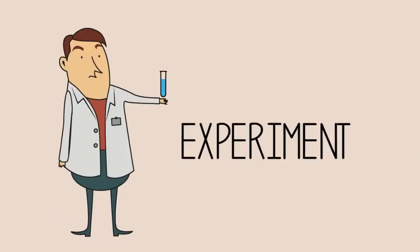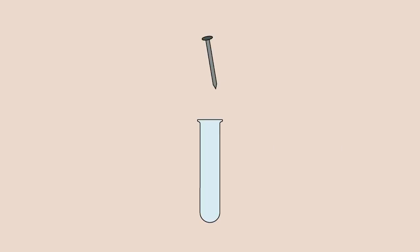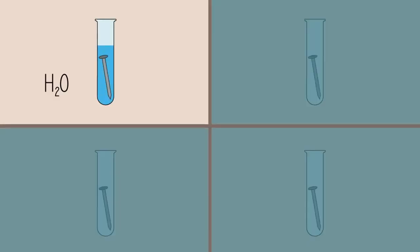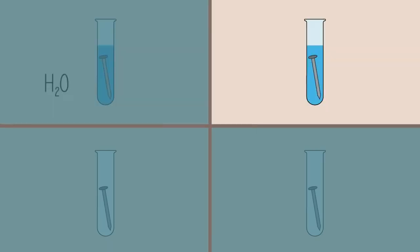We can demonstrate this using a simple experiment. Place an iron nail in four test tubes. Fill one with regular tap water until the nail is submerged. Fill another with regular tap water and add half a spoonful of sodium chloride, regular table salt. Shake from side to side to ensure that sodium chloride fully dissolves.